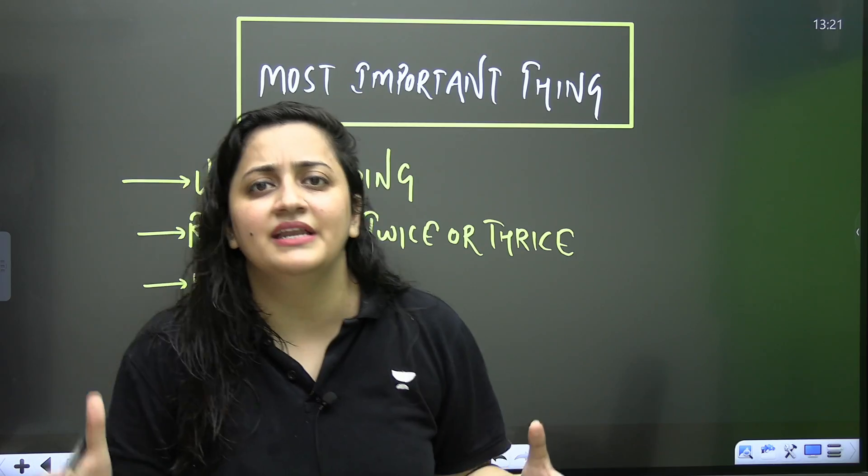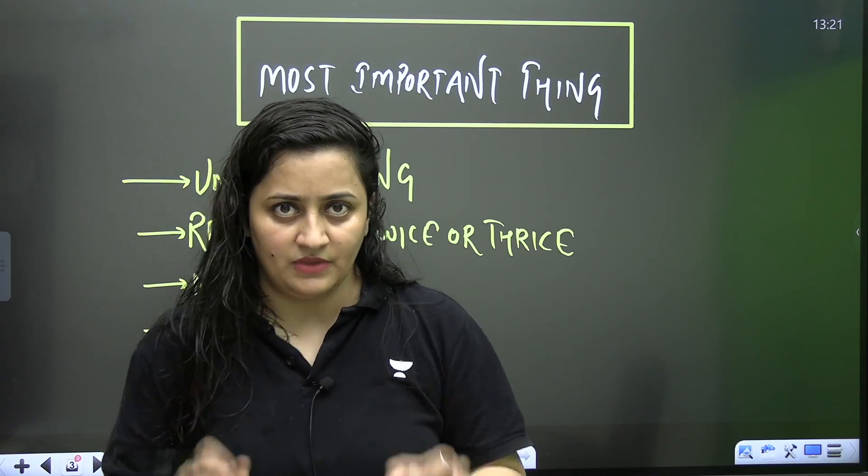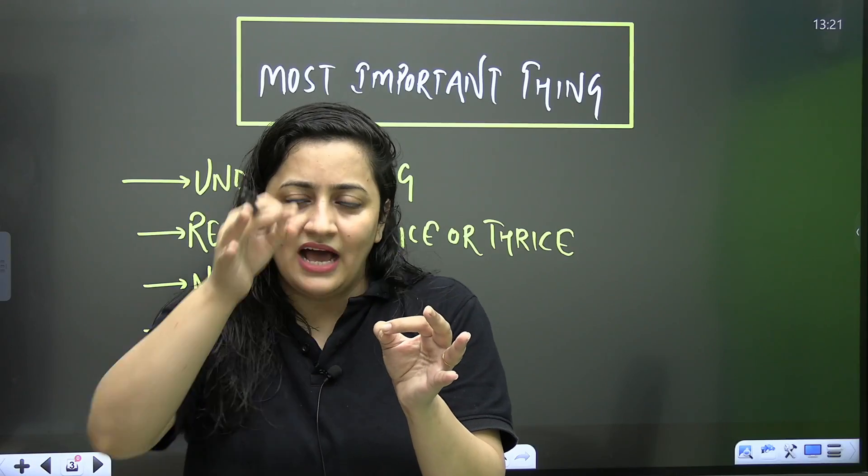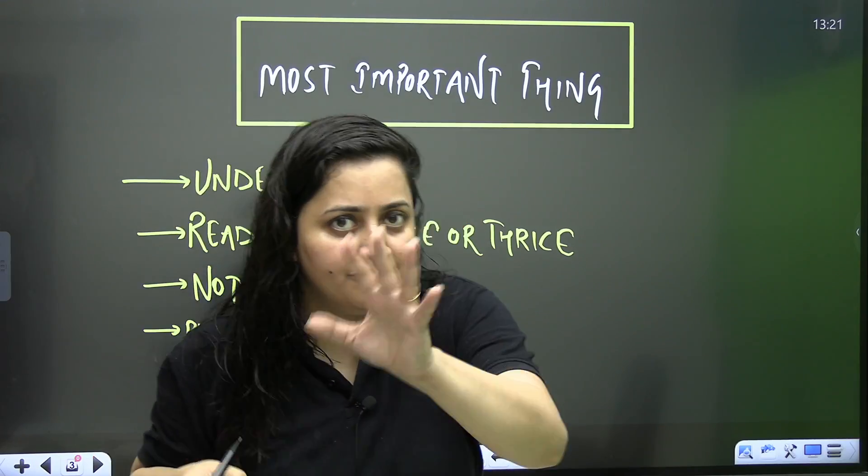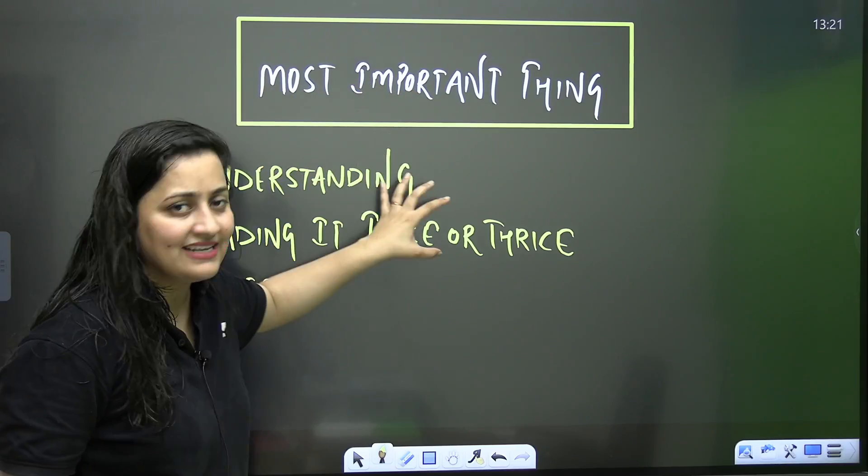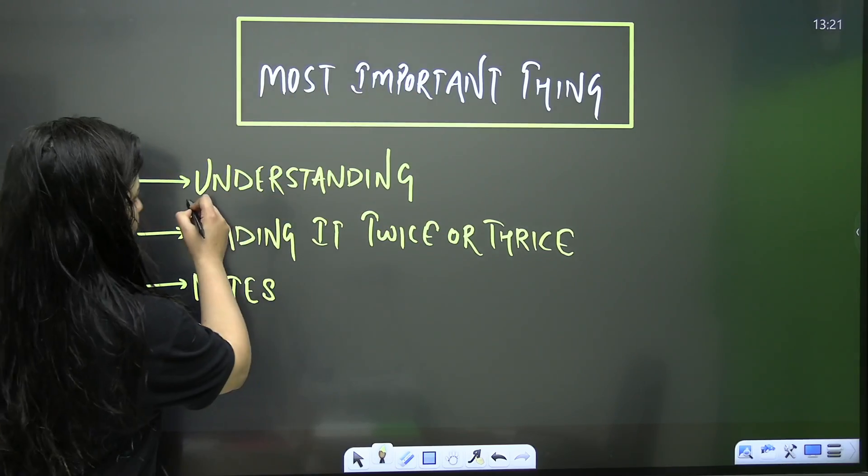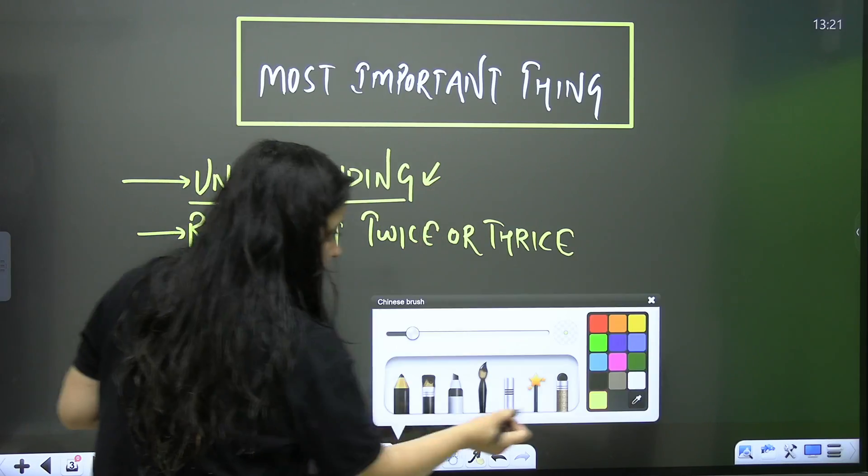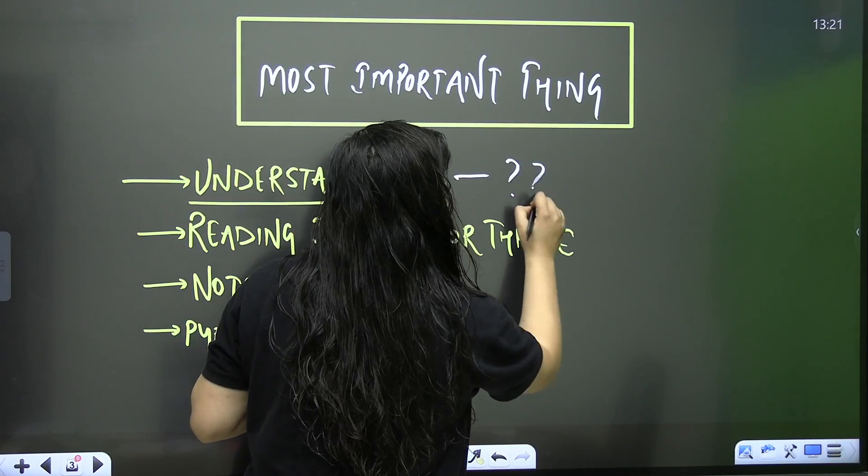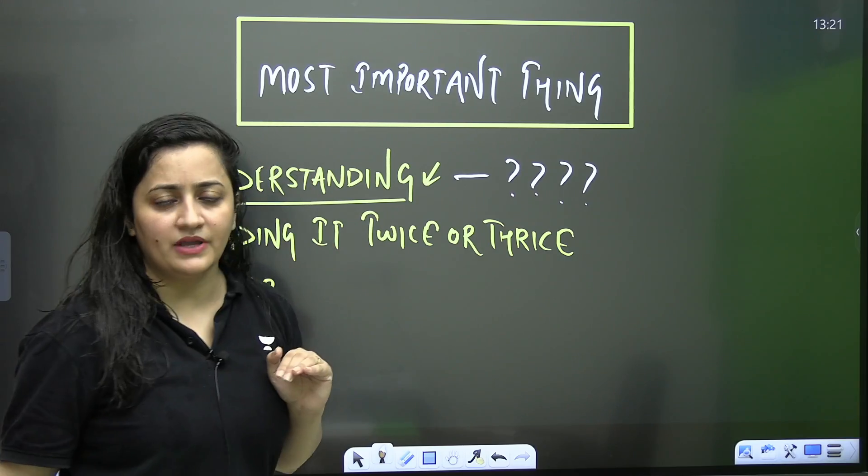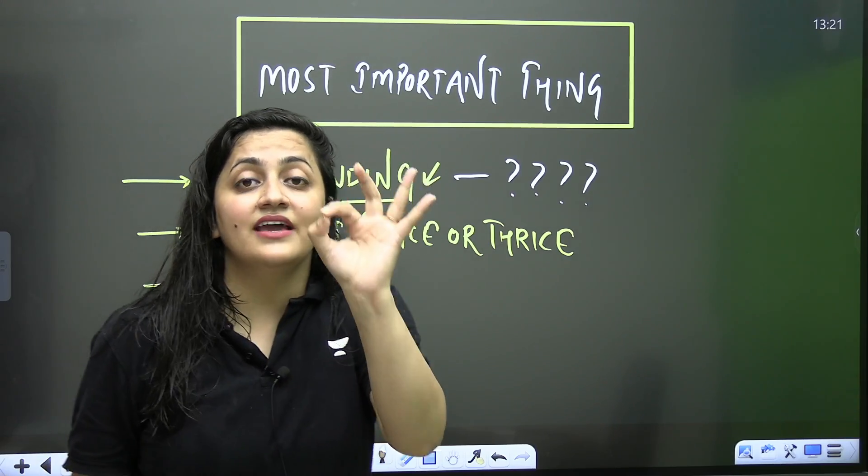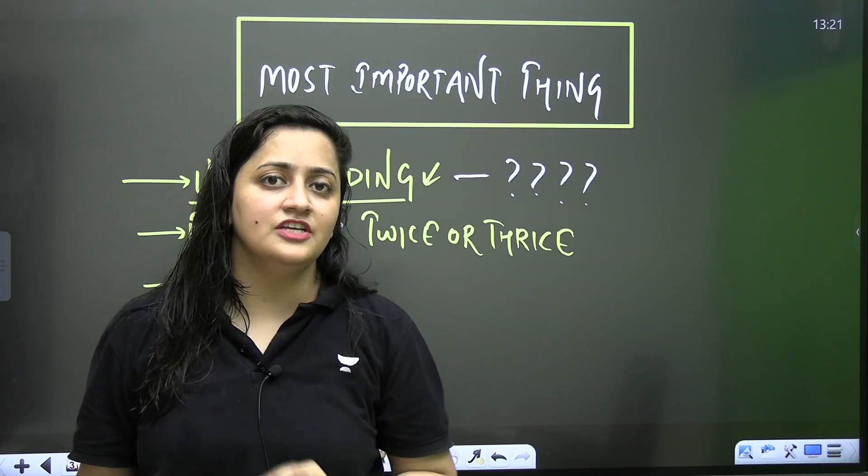We should know what the meaning of each and every statement. This is what I repeat many times even when I'm teaching you something. But point by point I'll tell you what you have to do, how you need to proceed. First of all, most important things. Understanding. Your understanding of a particular topic. You need to understand the NCRT biology. You need to understand each and every chapter.